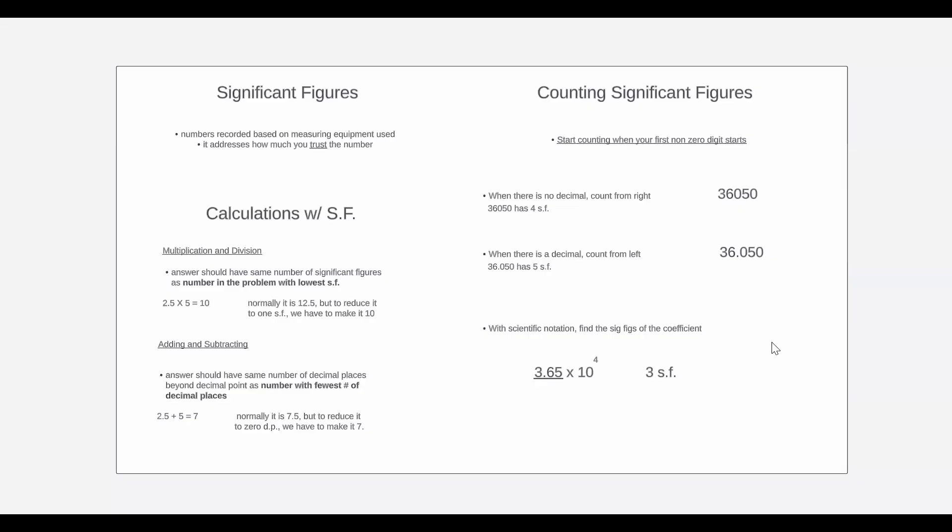When there is a decimal, you start counting from the left. So in 36.050, our first non-zero digit is the first number itself. And from then onwards, we have five digits, so we have five significant figures.